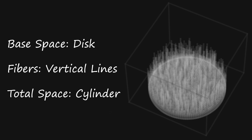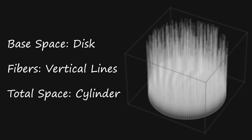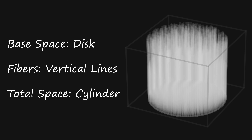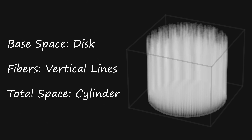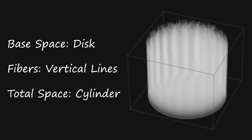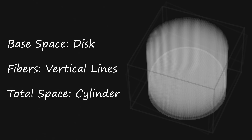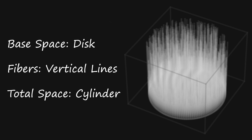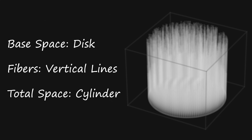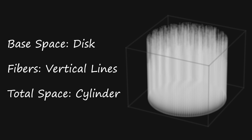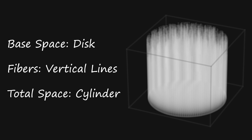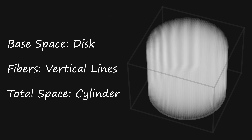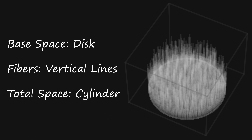Cylinders are a pretty common shape, right? We all know what a cylinder is. But have you ever thought about a cylinder as being a set of fibers that are growing upwards from a circle? This is a simple example of a fiber bundle, and we'll use it to illustrate the concept of base space, fiber, and total space. In this example, the base space — the space where all the fibers live — is the circle. The fibers themselves are these straight lines that just go straight up, and the total space formed by all these fibers is a cylinder.